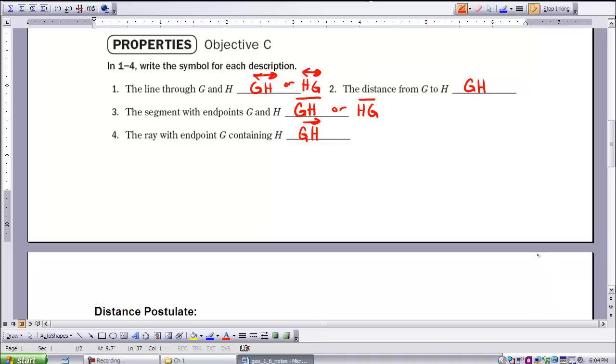As you can see here, for number one, a line through G and H. Now we discussed what a line looked like back when we were defining the point line plane postulate. We name a line by two points on the line, and we have the double arrows on top. It doesn't matter which way we put it, either order is fine.